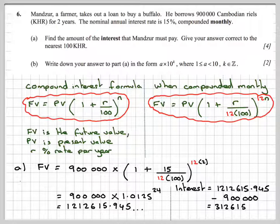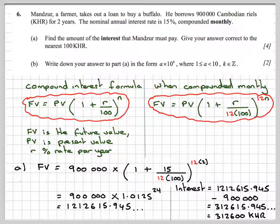That gives 312,615.945. To the nearest 100, the answer is 312,600 KHR.